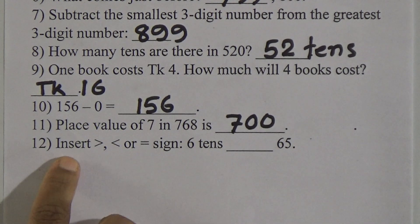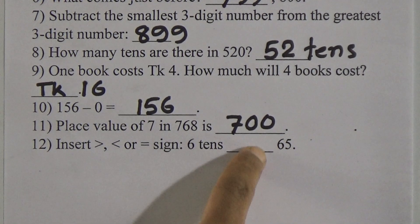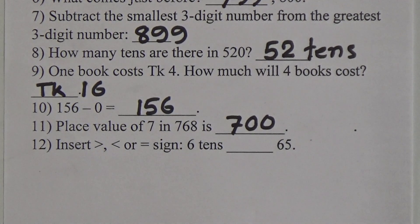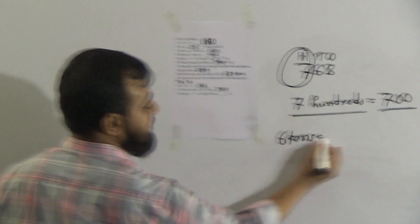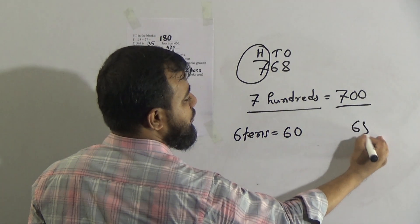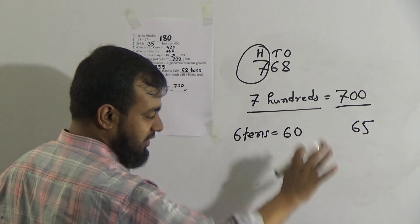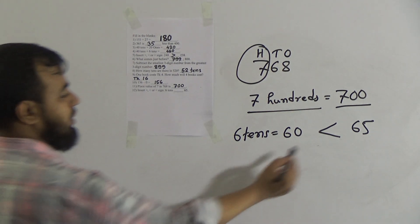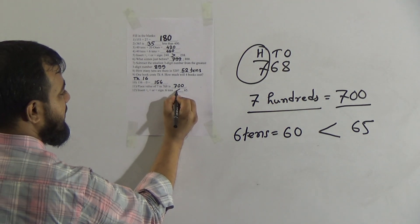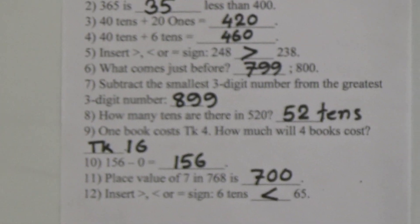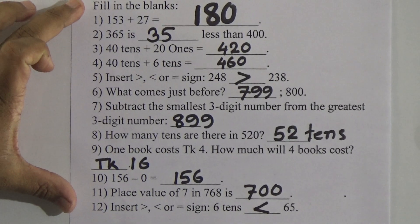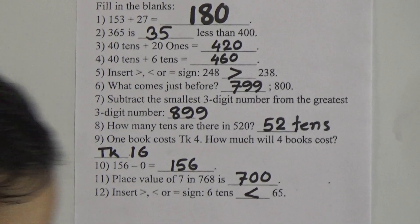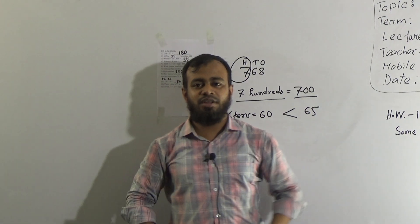Question number 12: insert greater, less, or equal sign. On the left we have 6 tens, on the right we have 65. 6 tens equals 60. Since 65 is greater than 60, we write a less-than sign: 60 is less than 65. Dear students, I hope you understood today's lecture. Your homework is the same — write all the blanks in your assigned HW copy and submit it every Saturday from 9 a.m. to 3 p.m. See you again, inshallah. Allah Hafiz.